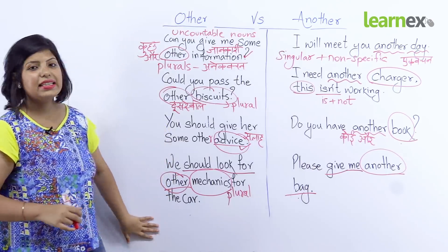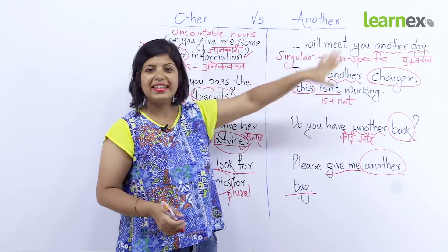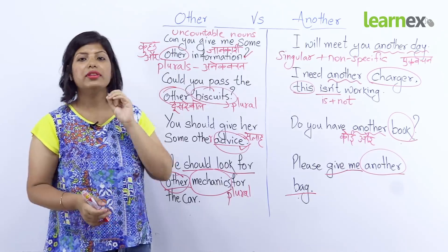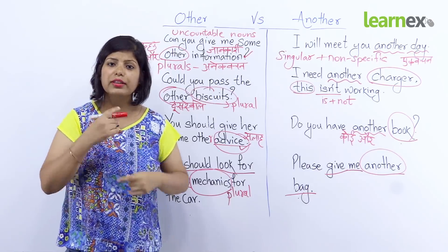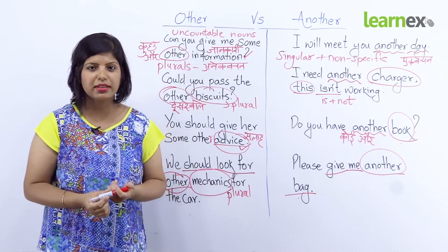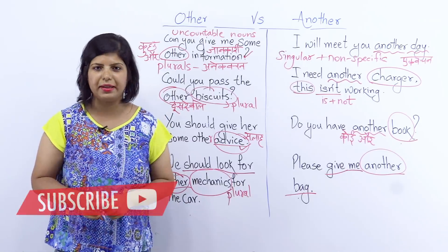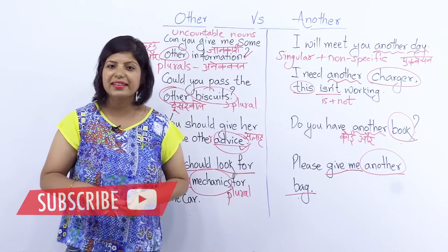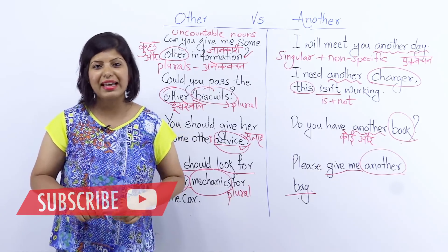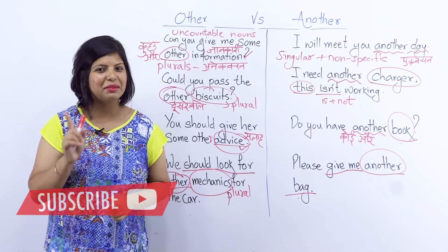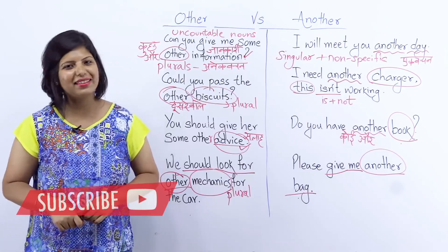Toh yes friends, is tarike se aap use kar sakte hain apne sentences mein 'other' ya 'another'. In sentences ko dhyan se samajhna hai. Agar aapko koi baat samajh mein nahi aayi toh aap video ko pause karke dobara dekh sakte hain aur explanation sun sakte hain. Aaj ke liye bas itna hi — I hope aapko yeh lesson bahut zyada pasand aaya hoga. Zaroor humare video ko like kijiye aur hamare channel ko subscribe karna mat bhooliye. Mein aap se dobara milungi — apna dhyan rakhiye, bye!